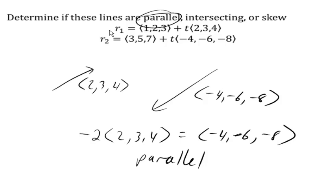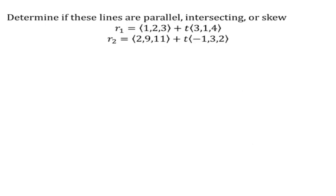Now let's look at some other ones. So now we have two new lines. Looking at these, it's pretty clear that they're not scalar multiples of each other. And so now we have to consider, could they be intersecting?